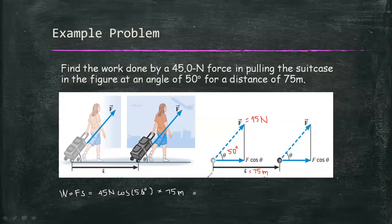In that case, we are going to use 45 newton times cosine 50 degrees, then we will multiply it by the displacement which is 75 meters. Now let's solve for this, and our answer is 2,169.41 newton meter, or we convert it into joule, which is 2,169.41 joule. So this is our answer in this problem.